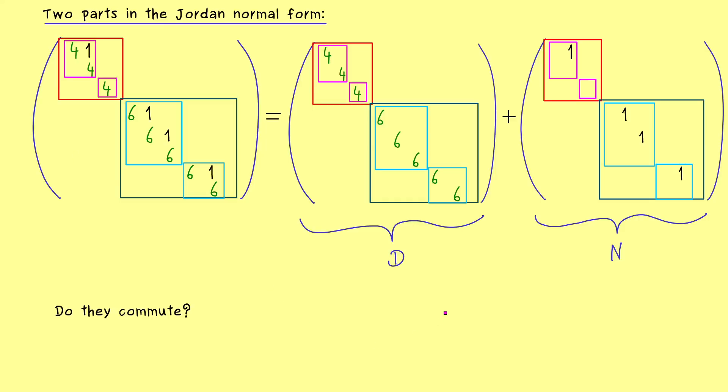And now the question I want to ask you. Do these two matrices, D and N, commute? So we just have to calculate D times N and see if this one is the same as N times D. And now the good thing is, that this multiplication is not complicated at all, because it breaks down to the Jordan boxes.